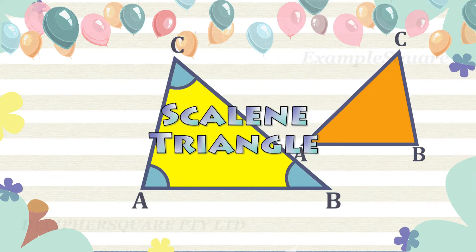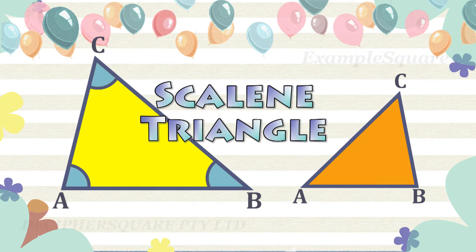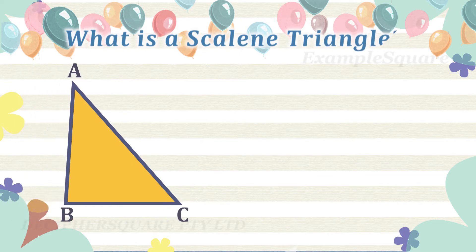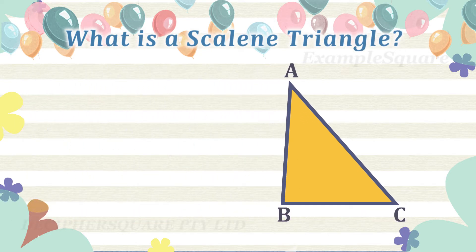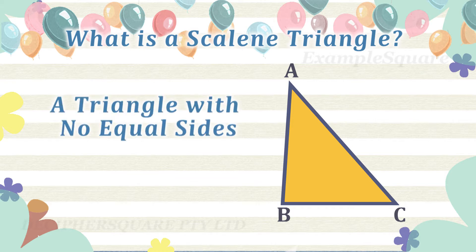Scalene Triangle. What is a scalene triangle? A triangle is a polygon with three sides. A scalene triangle is a triangle that has three unequal sides — that is, a triangle in which none of the three sides are equal.